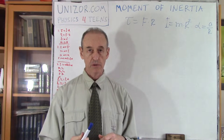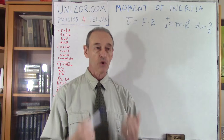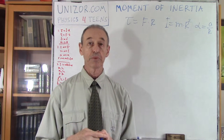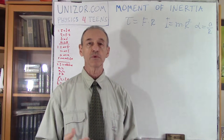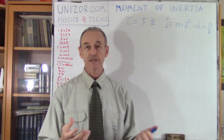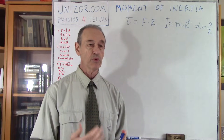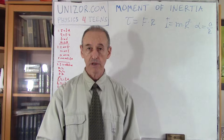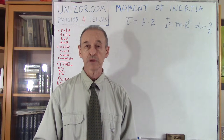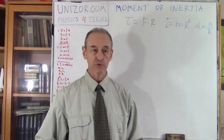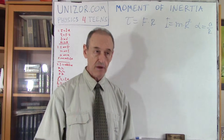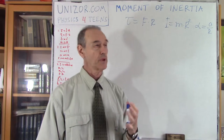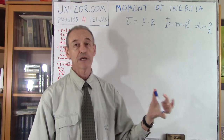Moment of inertia, which is the mass equivalent in rotational movement, is also additive. This is extremely important because it allows us to calculate the moment of inertia of complex bodies and solids. Without this property we could not calculate the moment of inertia of anything like a cylinder or sphere. Just as mass is important for knowing how to move an object forward, moment of inertia is equally important for knowing how it will rotate — it characterizes the difficulty of rotation, which we call inertia.